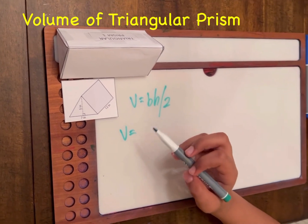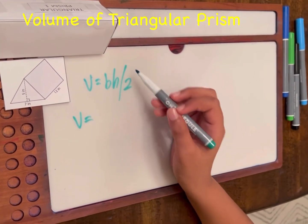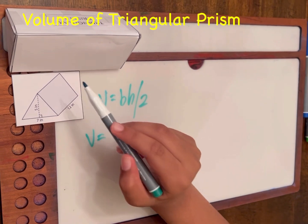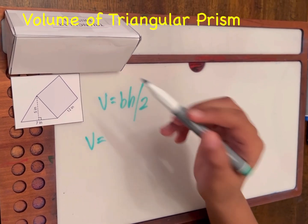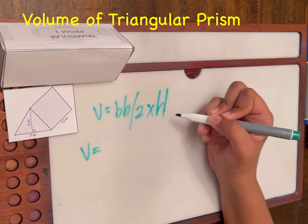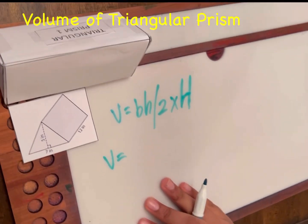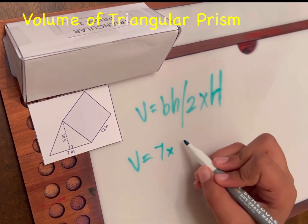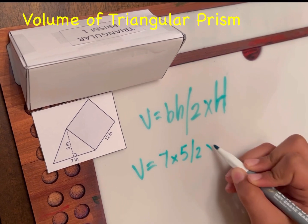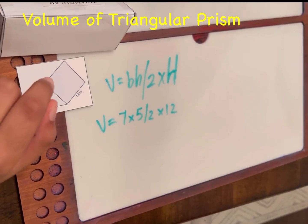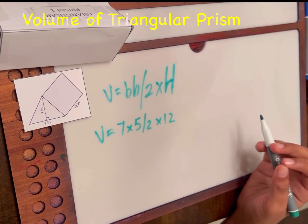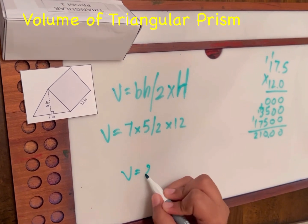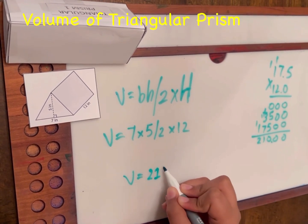The formula for calculating a regular triangle would be base times height divided by two. However, because this is a triangular prism, there's another height in this geometric figure, so you also multiply by the height again — this time it has to be capital H. In this scenario the formula would be 7 times 5 divided by 2 times 12. The answer is 210 inches cubed.